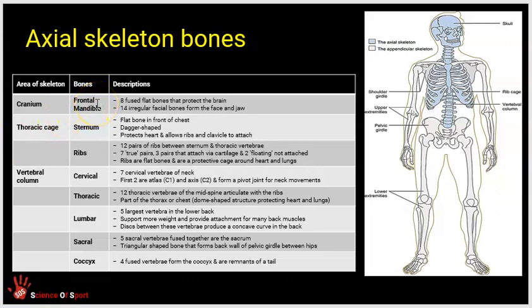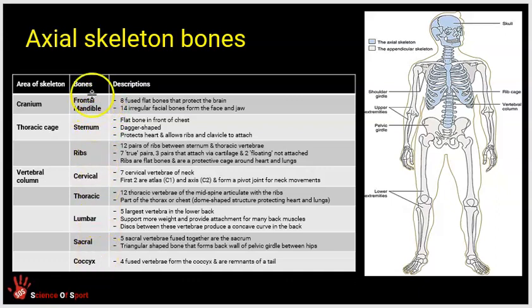Those are the three components of the axial skeleton. Pause the video and have a look through the bones that make up each of the three areas of the axial skeleton.